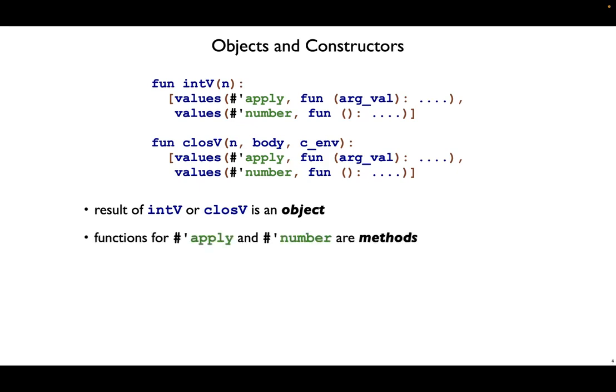Inside the list, we have pairs, and each pair in these lists represents a method. The inputs of the function are the fields for the object, and overall, these two functions are constructor functions.